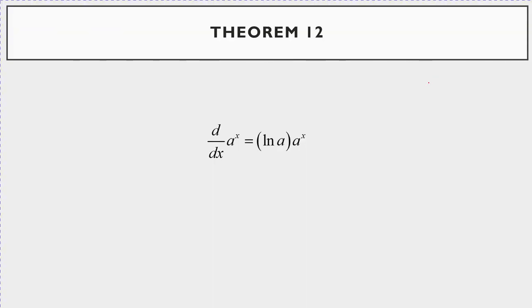The theorem to find the derivative of an exponential function of the form a^x: when you take the derivative, for example d/dx of 2^x, it's going to equal the natural log of the base — here the base is 2 — so it's the natural log of 2, times the function repeated: 2^x. And that's it.